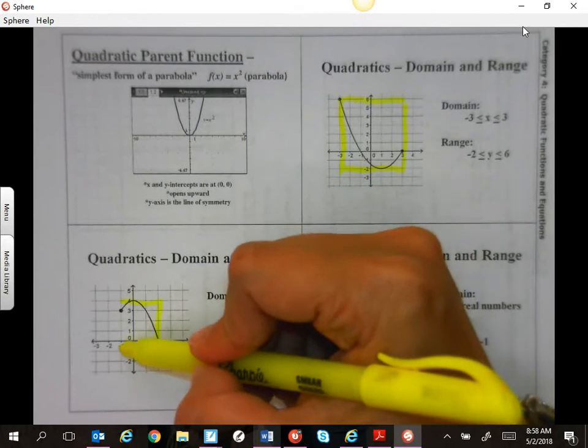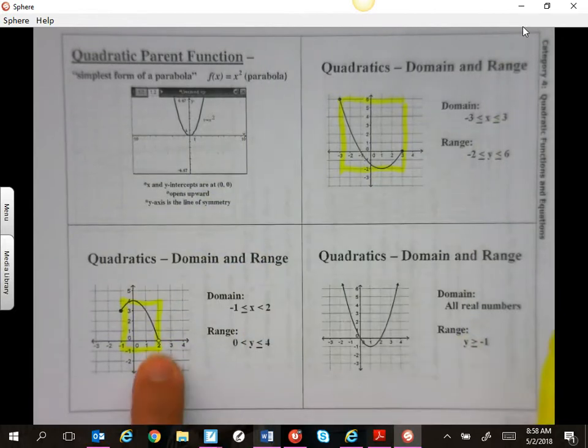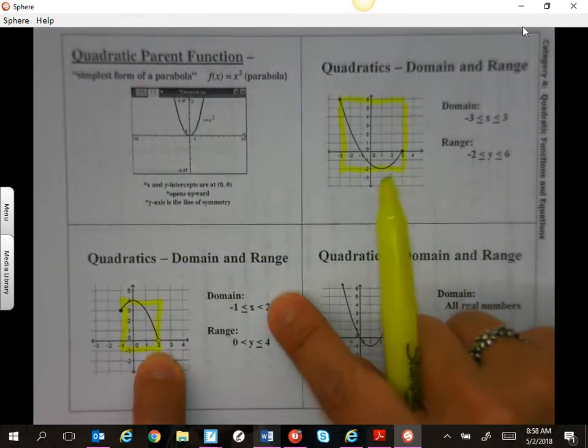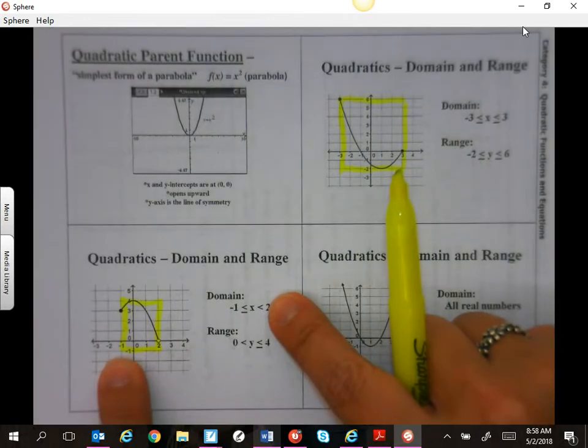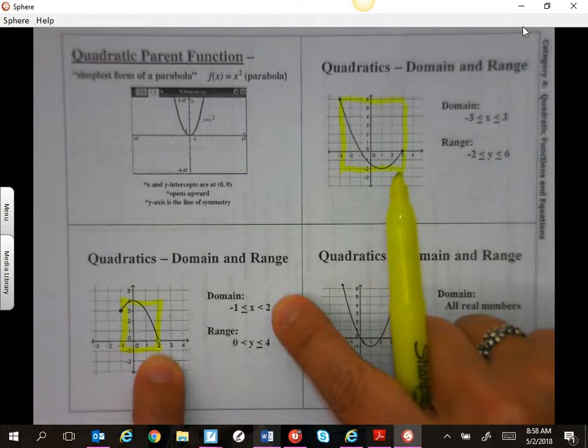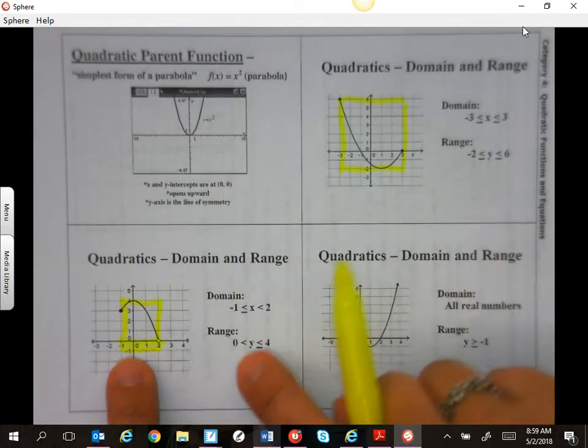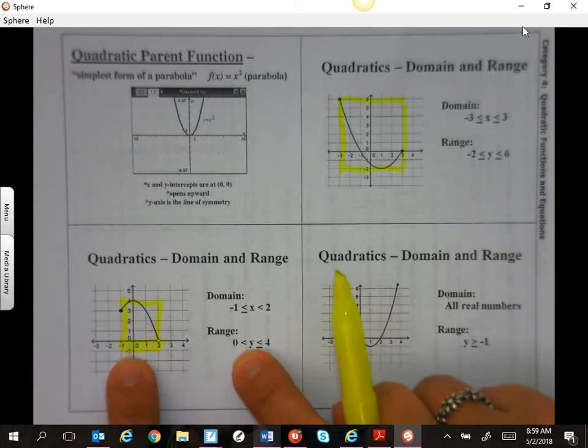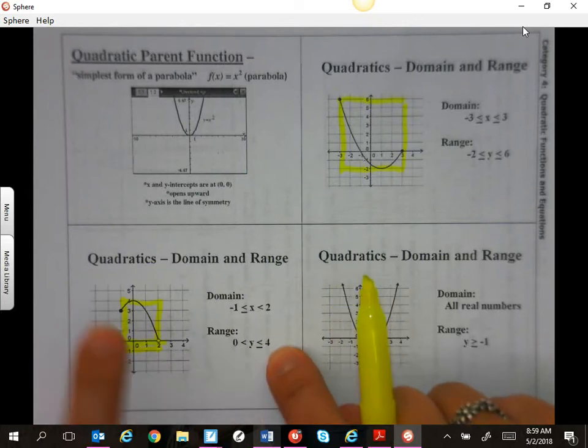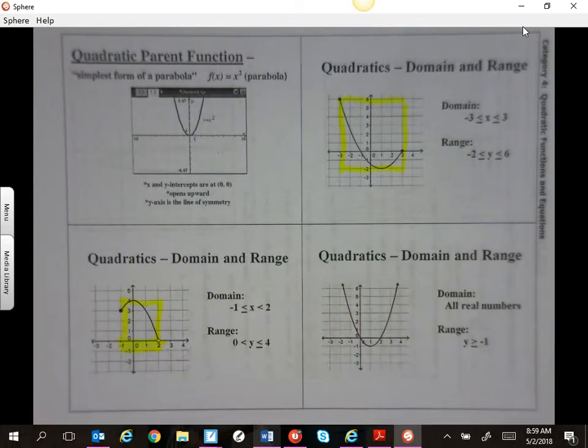Notice one's a little different. Notice it has an open circle on the two, which is part of our domain. So negative one is a closed circle, so or equal to. Two is an open circle, so just less than here. But it is touching at four, so it is a closed circle.